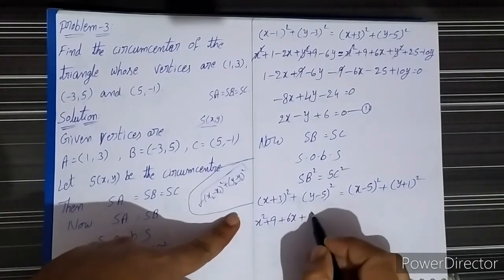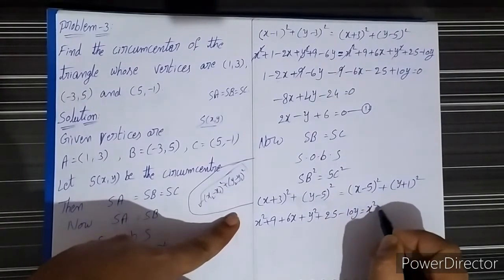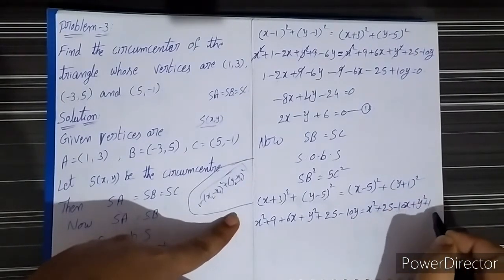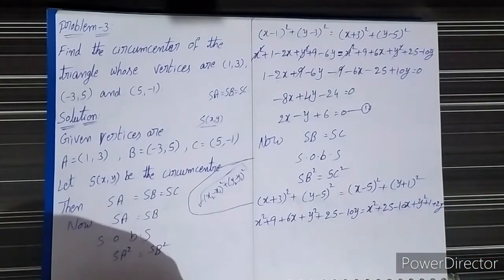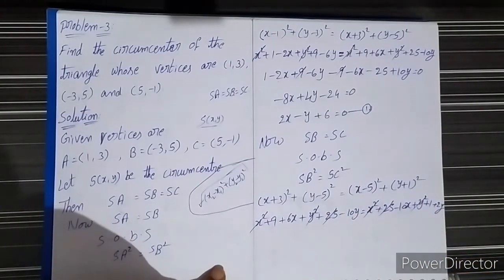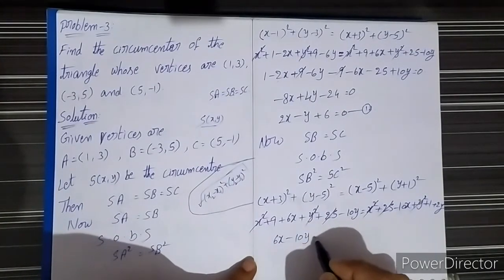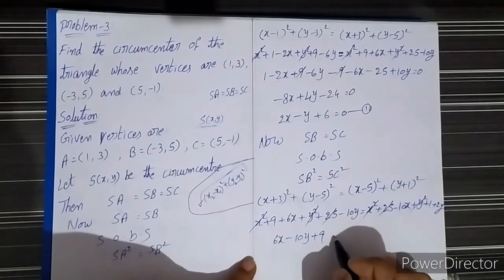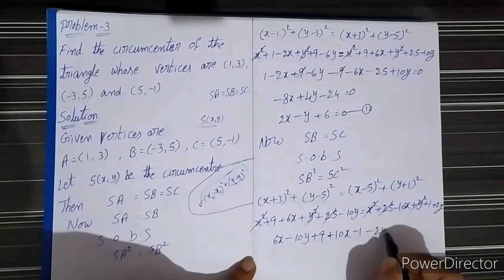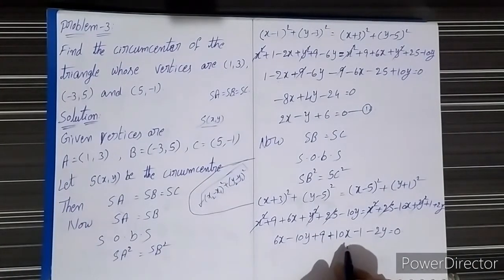After expanding: x² + 9 + 6x + y² + 25 - 10y = x² + 25 - 10x + y² + 1 + 2y. The x², y², and 25 terms get cancelled on both sides. The remaining values are: 6x - 10y + 9 and -10x - 2y - 1. Bringing all to one side: 6x + 10x - 10y - 2y + 9 - 1 = 0.